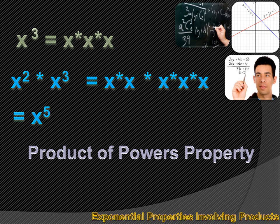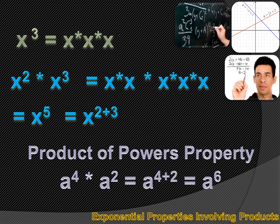Here's the product of powers property: we take x to the second power and multiply it times x to the third power. To get the answer, we can just add those powers — two plus three — and the answer is x to the fifth. The product of powers property says that if I have a to the fourth and multiply it times a squared, I just add those two powers, four and two, and my answer is a to the sixth.